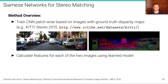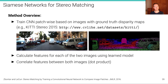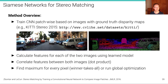Given a trained patch classifier, we can calculate features for each of the two images using the learned model, and correlate these features between both images using a simple dot product or a more sophisticated multi-layer perceptron to compare the patches. We can then find the maximum for every pixel using the simple winner-takes-all strategy discussed in the previous unit, or run a global optimization algorithm that incorporates some smoothness assumptions — something we will discuss in the next unit.